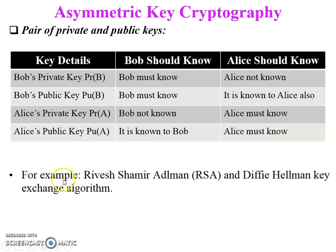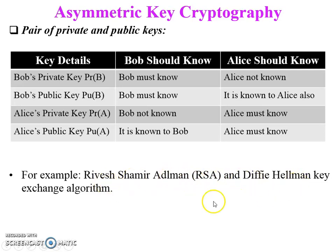A famous example of asymmetric key cryptography is the RSA algorithm — named after Rivest, Shamir, and Adleman — and the Diffie-Hellman key exchange algorithm. These are the most well-known algorithms of asymmetric key cryptography.